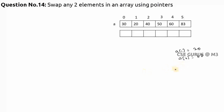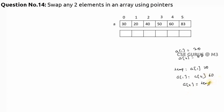In general, to swap we use a temporary variable: temp = a[1], then a[1] = a[4], then a[4] = temp. So temp holds 20, a[1] gets the value 60 from a[4], and a[4] gets temp which is 20. Previously it was 20 and 60, now it's 60 and 20. This is the standard swapping procedure.